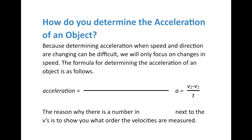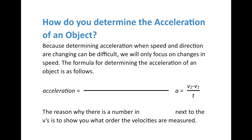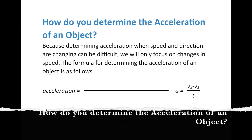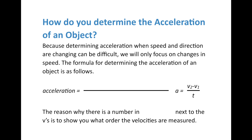Now let's do some math to determine the acceleration of an object. In middle school physical science, we'll focus on changes in speed. The formula for acceleration is: acceleration equals the final velocity minus the initial velocity, divided by time — or a = (v₂ - v₁) / t. That's only one extra step above determining speed.